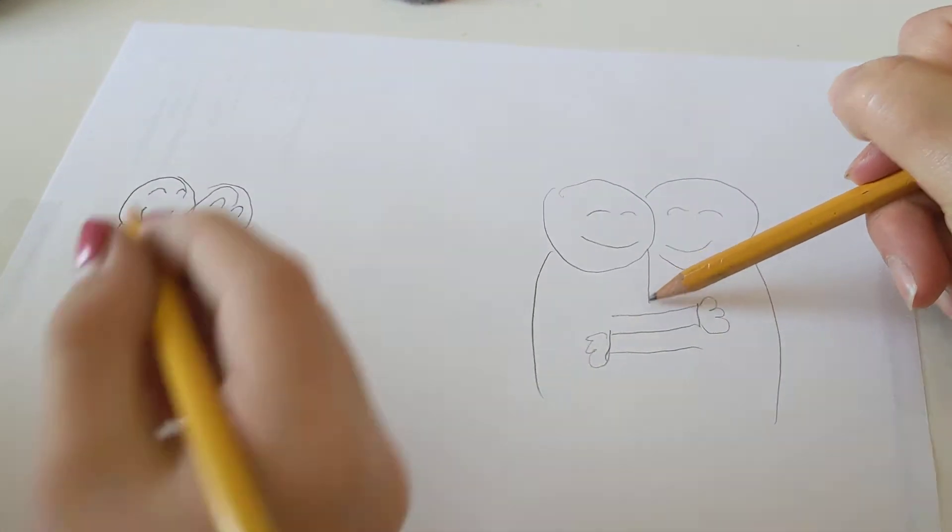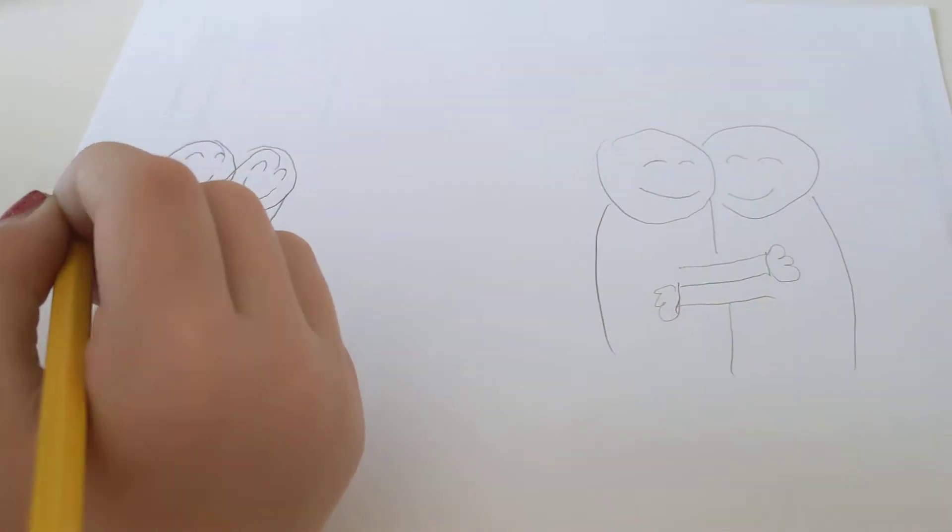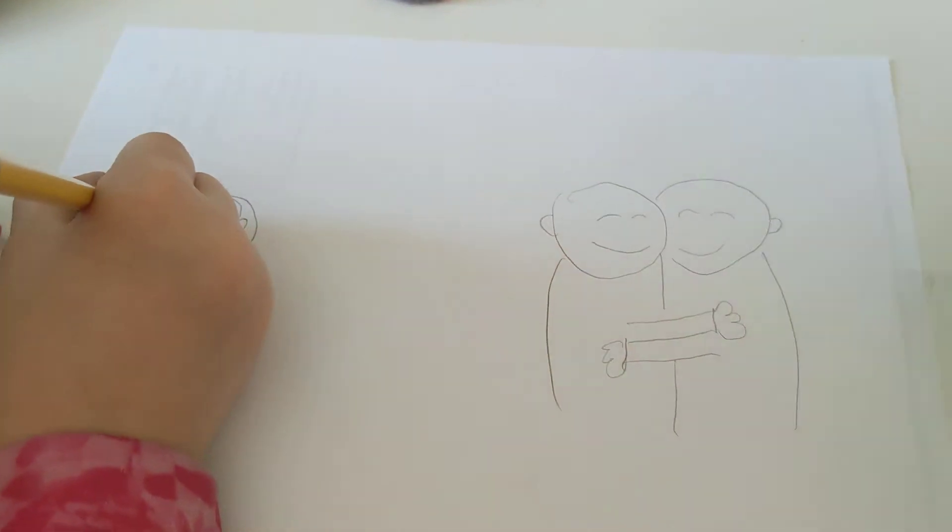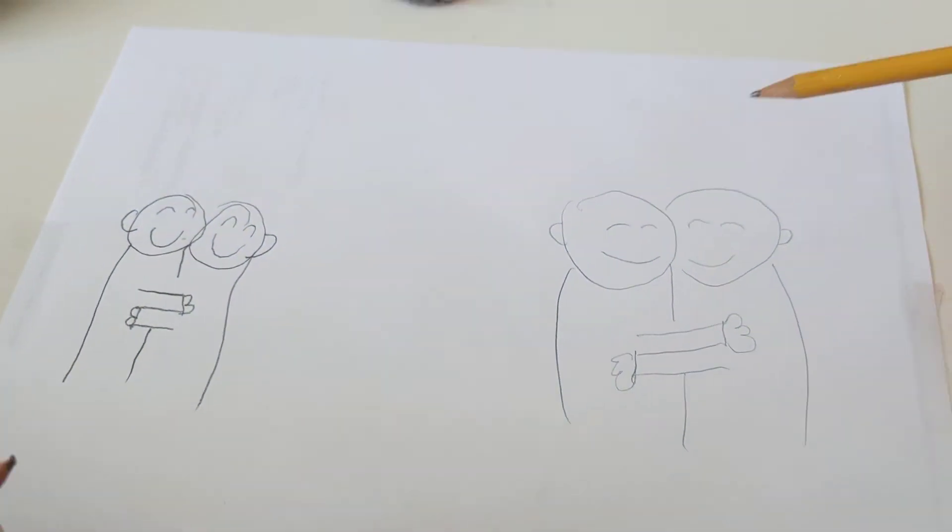Now we want to draw a line down the middle so you can tell who's who. Oh my gosh, beautiful. And then maybe let's put an ear on. That would look cute.